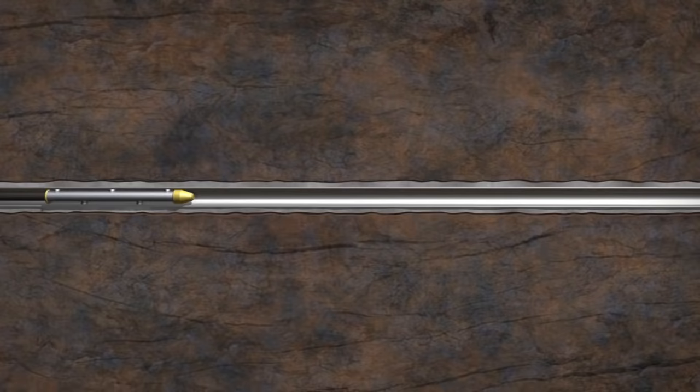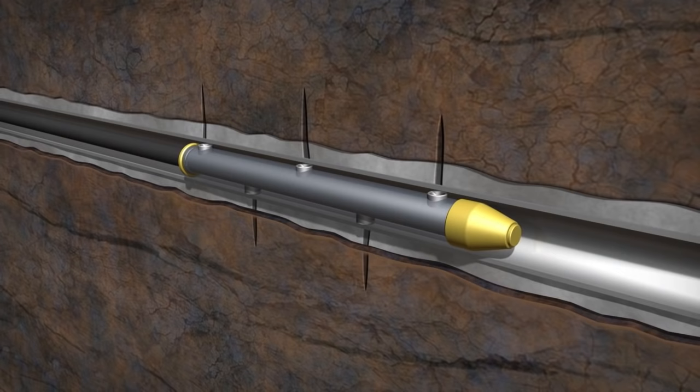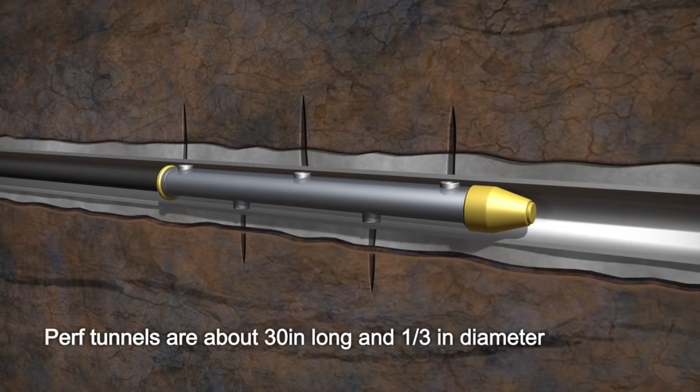The perforating guns are then lowered into the horizontal section of the casing via tubing and fired at a predetermined depth, perforating the casing and the rock with perf tunnels that are approximately 30 inches long and a third of an inch in diameter.